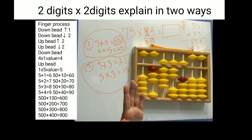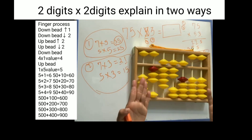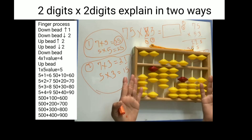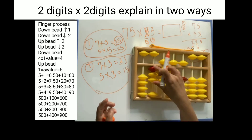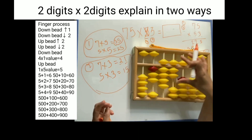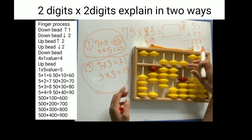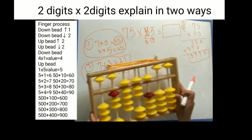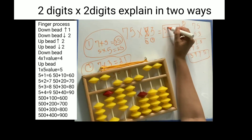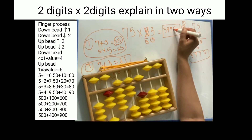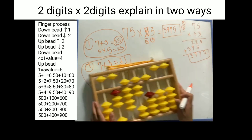Your answer is 3, 9, 7, 5 — that is 3975.